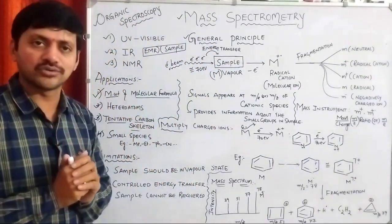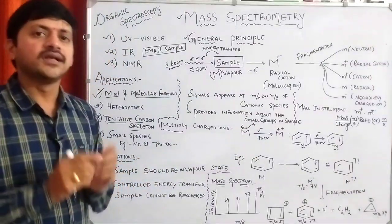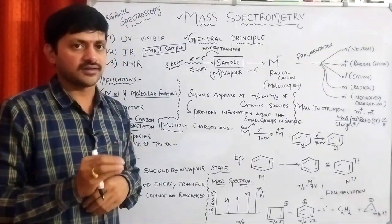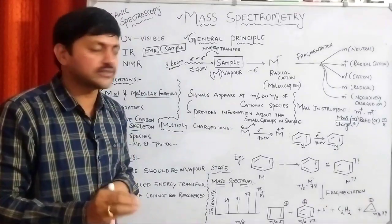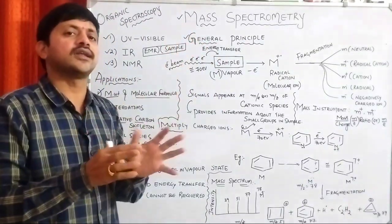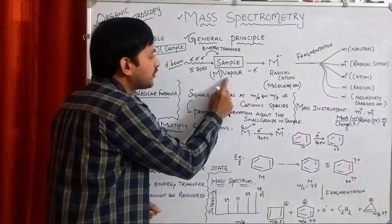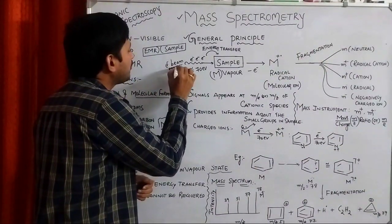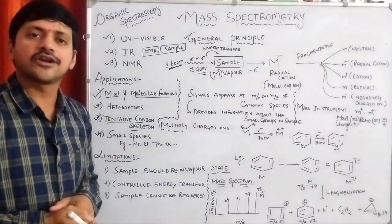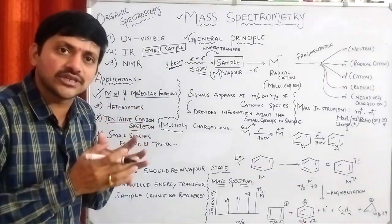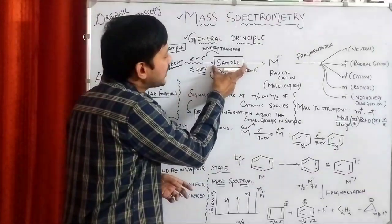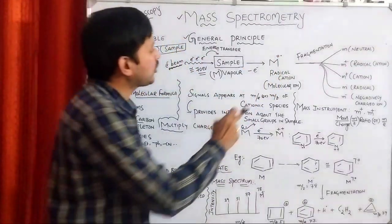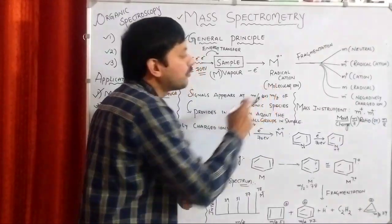Now assume we have one unknown sample, represented as M (capital M). In mass spectrometry, the sample must be in the vapor state — in gaseous state — only then can it be analyzed. The unknown sample is present in the vapor state, and we send an electron beam of energy of 70 electron volts. When we send this much energy, removal of electrons takes place from the sample.